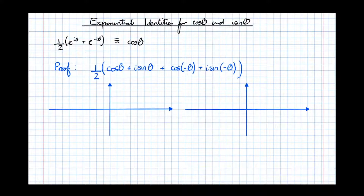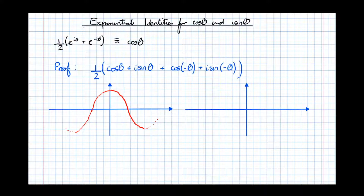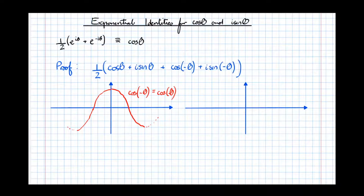Now two sets of axes appear because we're going to draw the sine and cosine functions to do the next stage of simplification. Looking at the cosine function, notice that it is symmetrical about the y-axis. That means that for any angle, cos of the negative of that angle has exactly the same value, so cos(−θ) = cos(θ). That's helpful because it lets us replace cos(−θ) with cos θ in our expression.